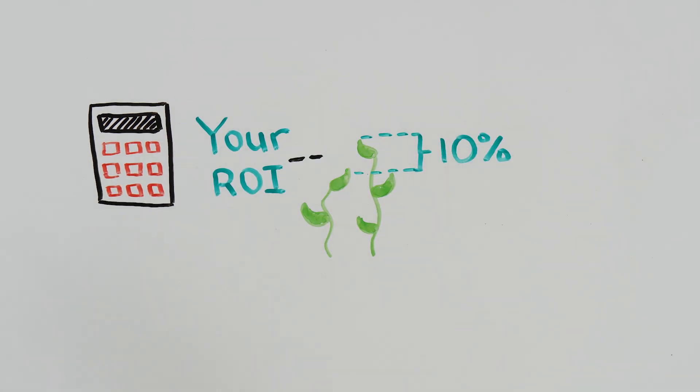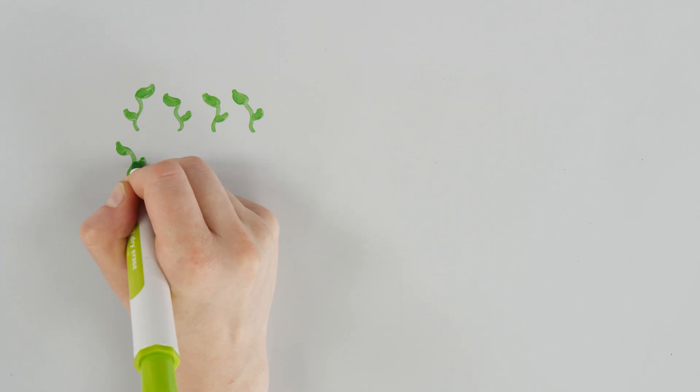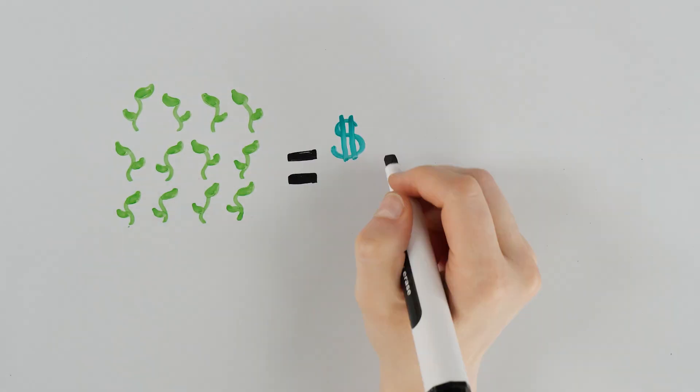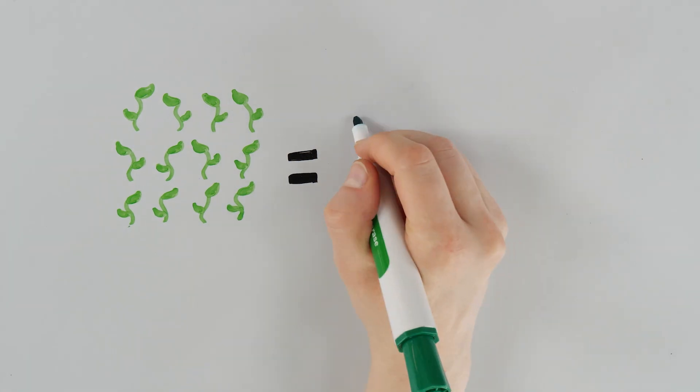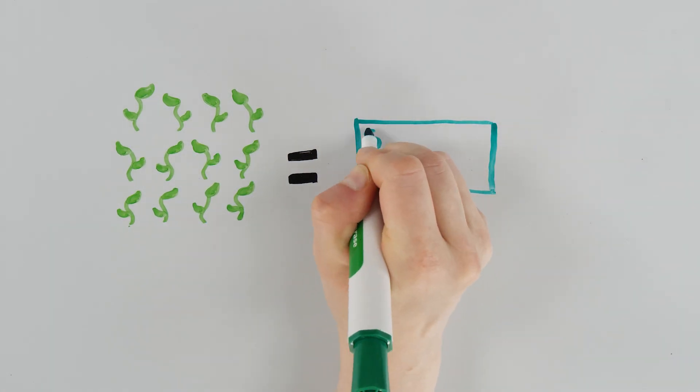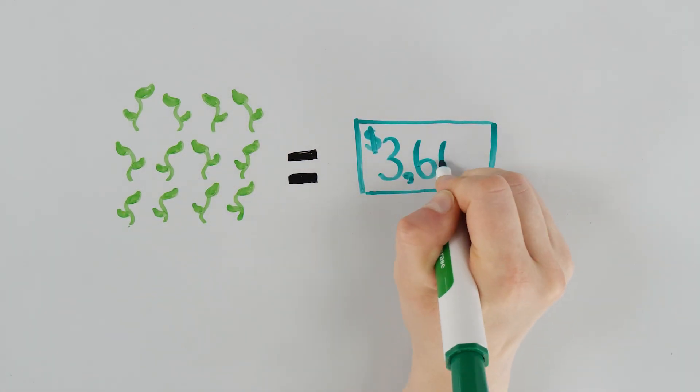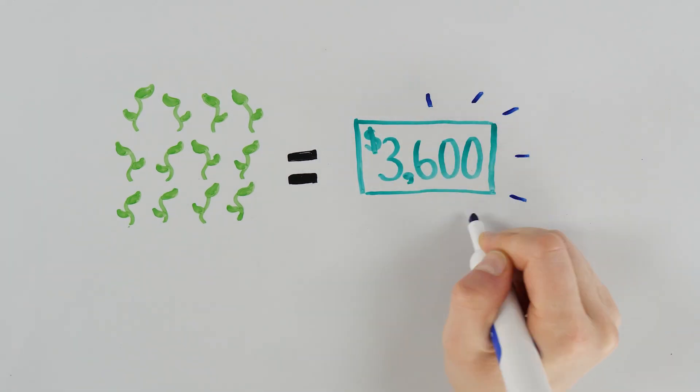With Hydroflex, you can expect about a 10% increase in your crop's yield. Let's say you're growing 12 plants and your sell price for your crop is about $1,600 per pound. By using Hydroflex and factoring in a 10% yield increase, you can expect to see a yearly profit increase of about $3,600 per year.